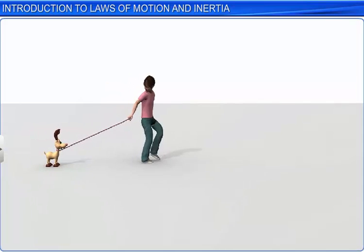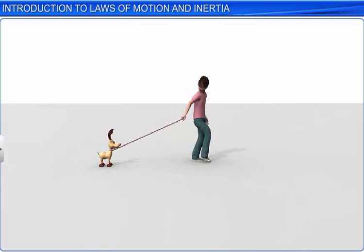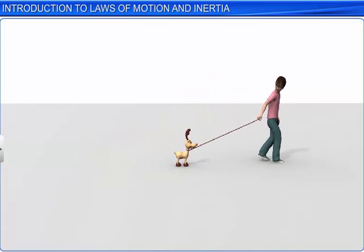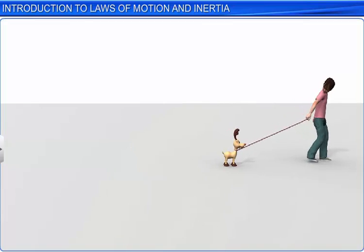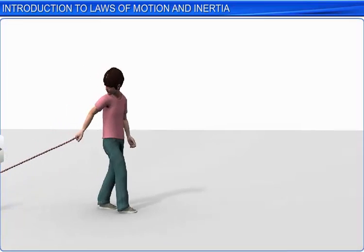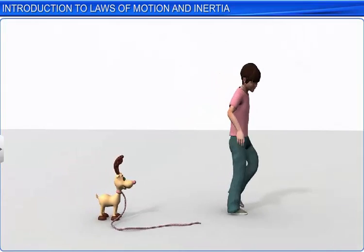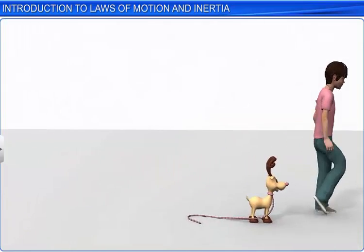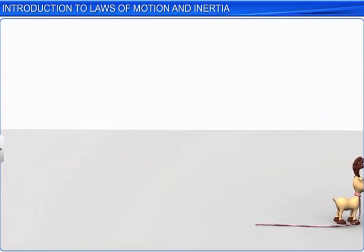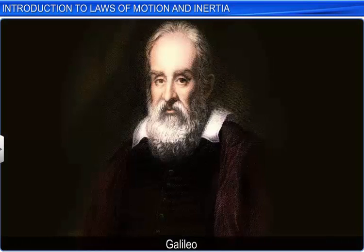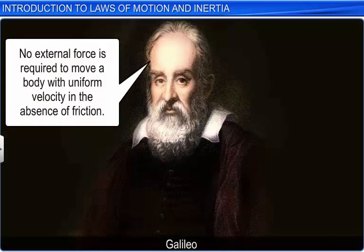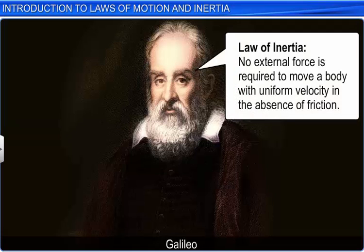This is an example from our existing world. Now let us go into a virtual world where there is no friction of any kind. Then the boy need not apply any force to keep the toy moving with uniform velocity. This is exactly what Galileo said — Galileo proved that no external force is required to move a body with uniform velocity in the absence of friction. Galileo conducted two simple experiments before postulating the law of inertia.